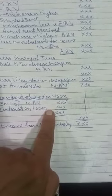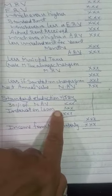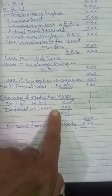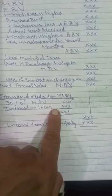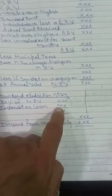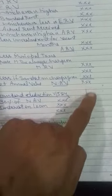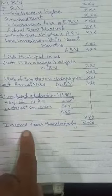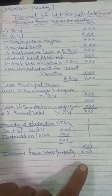Interest on loan: if you have taken a loan to buy the property, you will get a deduction for the interest on that loan. After these deductions, you arrive at your income from house property.